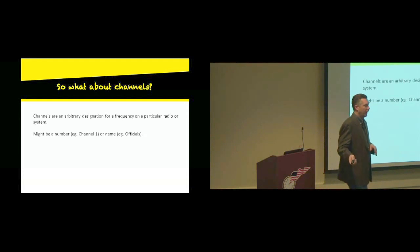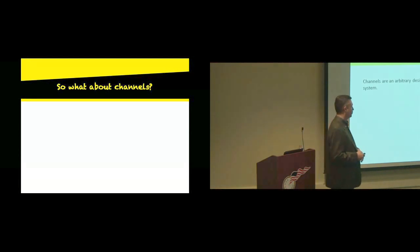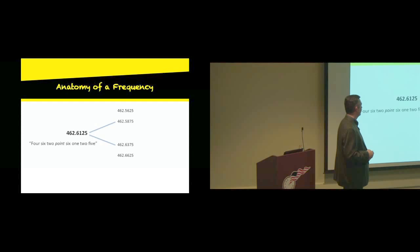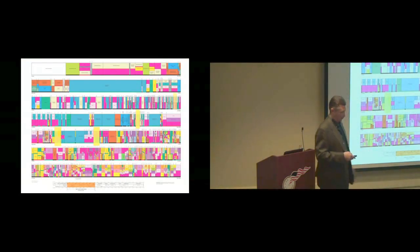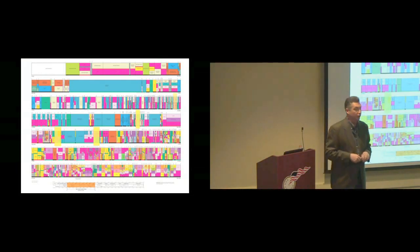The narrow banding issue: that spectrum you saw on the chart is worth a lot of money. Cell phone companies like AT&T, Sprint, and Verizon pay billions of dollars for little bits of it. What they've done is take that spectrum and slice it ever thinner as technology's gotten better. They're requiring everybody with radios to program them to hit that little thin slice instead of a bigger slice. If you do have LA radios, you probably want to look into that.